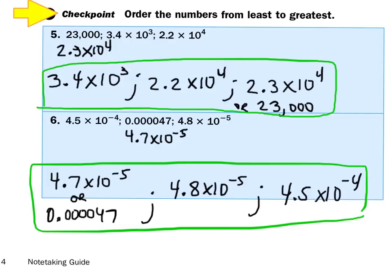Sorry, I'm laughing because my puppy Fiona is going crazy trying to get my attention! Take a look at number 6. I see 4.5 times 10 to the negative 4th power, then 4.7 times 10 to the negative 5th, and 4.8 times 10 to the negative 5th. Remember, 10 to the negative 5th is smaller than 10 to the negative 4th. So between the two with negative 5th power, 4.7 is smaller than 4.8, making 4.7×10^-5 the smallest, then 4.8×10^-5, and the largest is 4.5 times 10 to the negative 4th power.